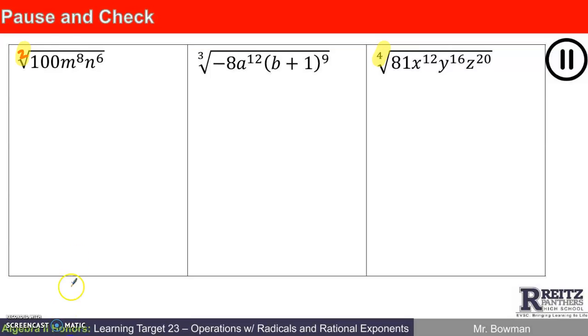Let's talk about things. I'm looking for the square root of 100 m to the 8th n to the 6th. I need a number that I can square to get 100, I like 10. I'm looking for a thing that I can square to get m to the 8th. How about m to the 4th? I don't need absolute value around that because it has an even power.